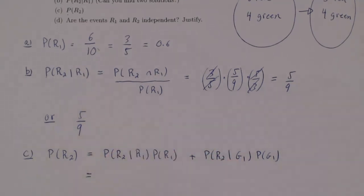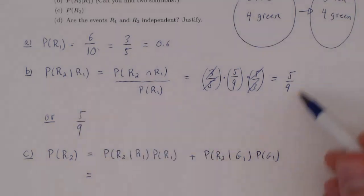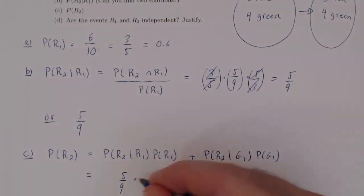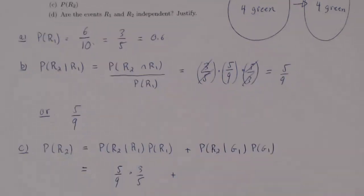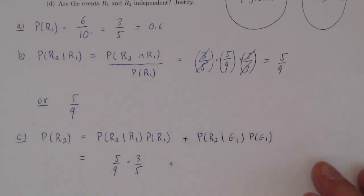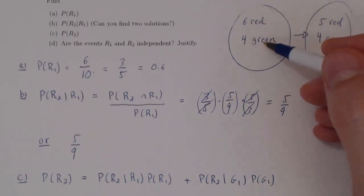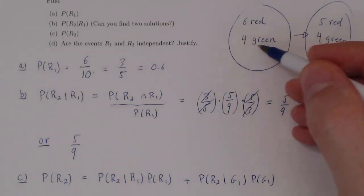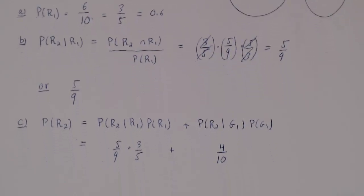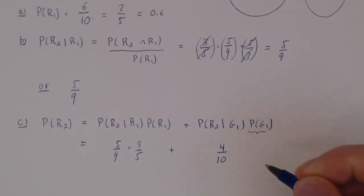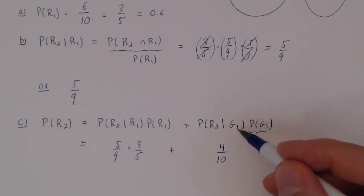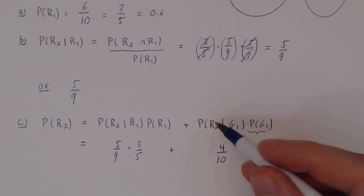P(R2 | R1) we previously found to be 5 out of 9. P(R1) we found to be 3 out of 5. For P(G1) — the probability of getting a green ball on the first pick — initially we have 6 red and 4 green, so that's 4 possibilities out of 10. The remaining question is: given that the first ball selected was green, what is the probability of the second being red?